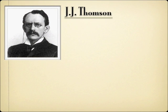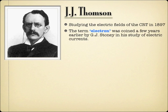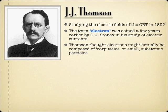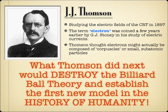The person who came along and jumped on what Crookes did was J.J. Thompson. Thompson studied the electric fields in the CRT in 1897. He did not actually come up with the term electron — that was coined by another scientist earlier in the study of electric currents. But what J.J. Thompson did is he thought that the electrons might actually be tiny subatomic particles — corpuscles, as he called them — that could be produced from all these different metals. What Thompson did would really alter the story of humanity, because J.J. Thompson would be the first one since Democritus to ever think about atoms in a way differently than anybody else ever had. By looking at the CRT, he was actually able to come up with enough evidence to disprove the idea that atoms were indivisible.